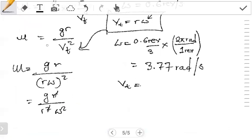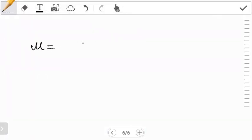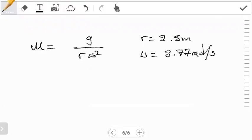Okay, so our r again is 2.5 meters, and then our omega we did work it out and we found 3.77 radians per second. So when you substitute this, g is 9.8 over r 2.5...